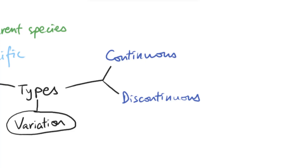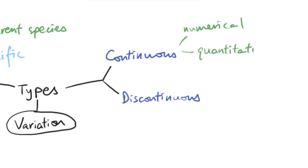Another way to look at different types of variation would be continuous and discontinuous — this is actually referring to what sort of data we're looking at. Continuous variation means the data you collect can be between any two points. For example, for length you can have 1cm, 2cm, or 1.12cm — it can take anywhere within that scale. Another way to say this is that they are usually quantitative, referring to quantity or numbers. We tend to use line graphs for presenting continuous data because of its numerical nature.